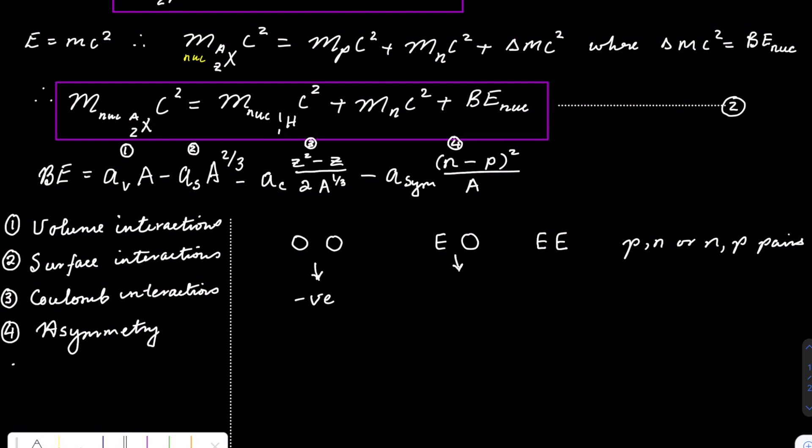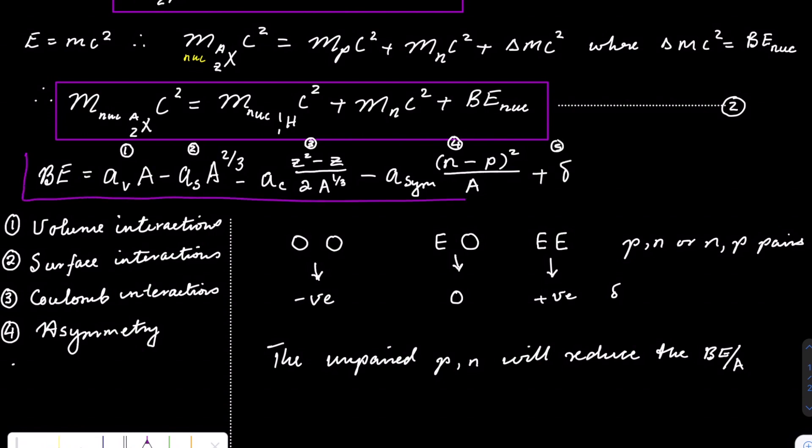The even-odd cancels out, whereas the even-even will always have protons pairing and neutrons pairing to each other. It is because of the unpaired neutrons and protons that you get the lower binding energy per nucleon, which is our last term in the binding energy expression.